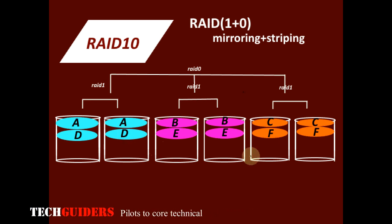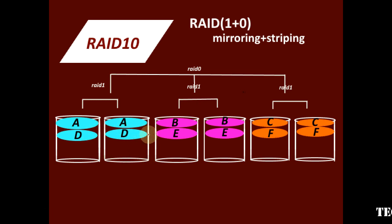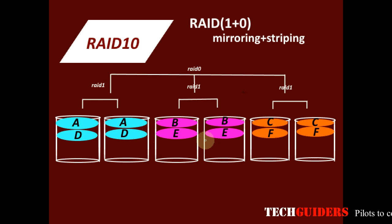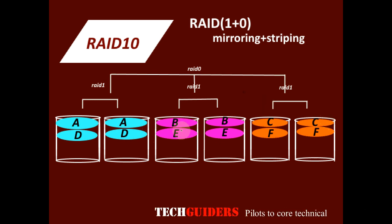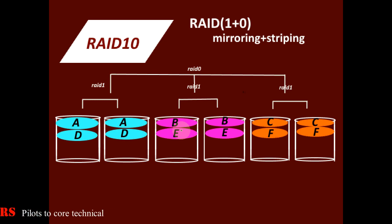What about write performance? Even though mirroring includes an overhead of writing to more than one disk at the same time, since striping is also used, it helps in parallel writes. Hence, write performance can also be improved in this level.